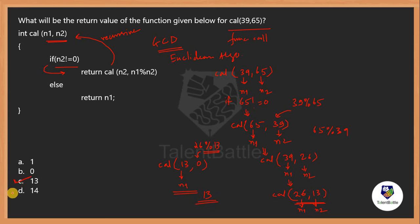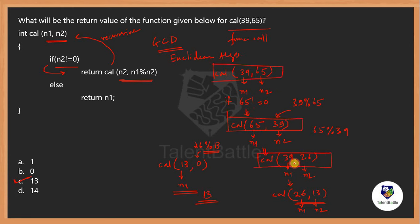So the final output is 13 — option C is correct. If you understand how GCD works or how recursive calls execute based on the given logic, you can trace through all the recursive calls, reach the base condition where n2 equals 0, and return n1. You can also verify by converting this logic into a program and passing 39 and 65 as parameters.